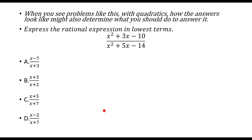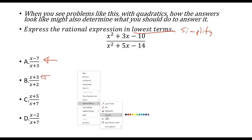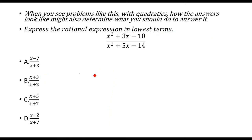When you see problems like this with quadratics, how the answers look might also determine what you should do. It says 'express the rational expression in lowest terms' — lowest terms means simplify, and simplify usually means factor stuff out. Look at the answers — they're all fractions. This would tell me I need to factor, and at some point I'm going to get something like x minus 7, or x plus 3, or x plus 2.